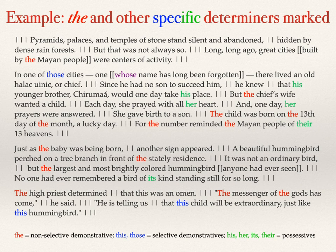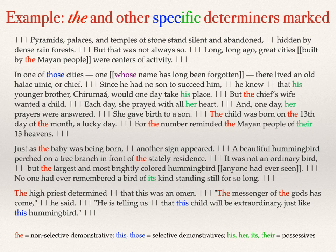The is in fact the most common of the specific determiners. You also have a few demonstratives — 'in one of those cities' — and possessives like his, her, its in this passage. In the very first paragraph: 'pyramids, palaces, and temples of stone stand silent and abandoned, hidden by dense forests. But that was not always so. Long, long ago, great cities built by the Mayan people were centers of activity.' Then you get the introduction of a chief, and then the chief's wife wanted a child. A child is introduced and the child was born on the 13th day of the month. There's also one relative: 'whose name has long been forgotten' — so that's also a specific determiner, but it's relative rather than interrogative.